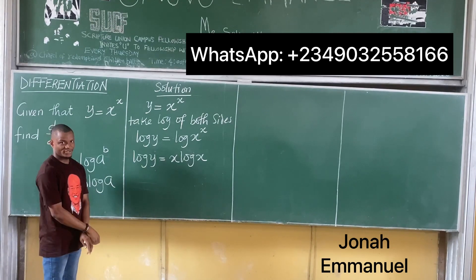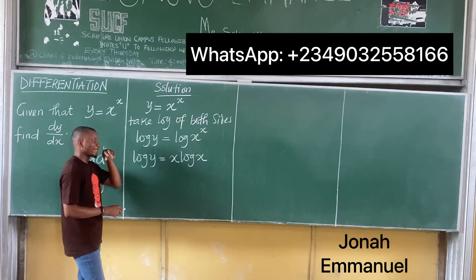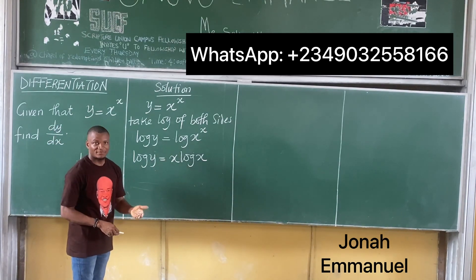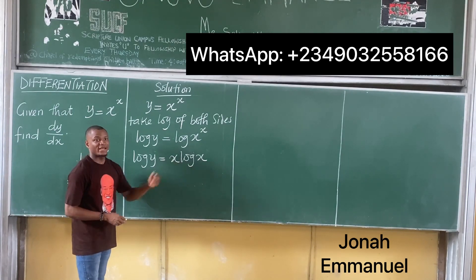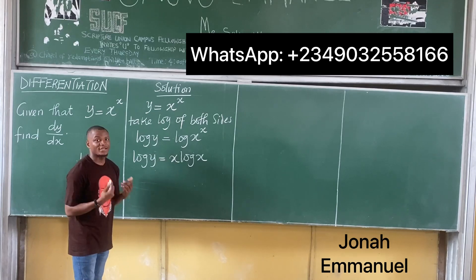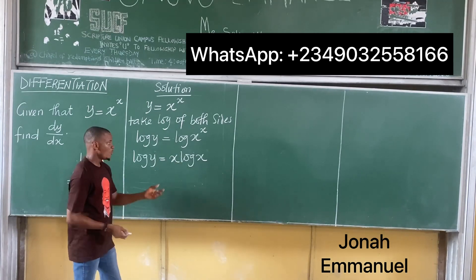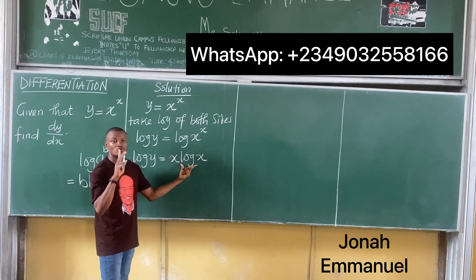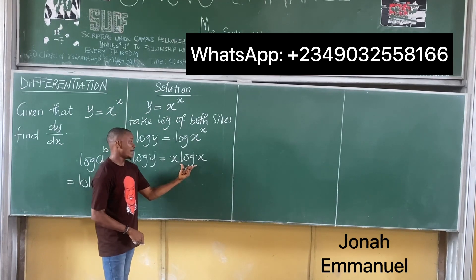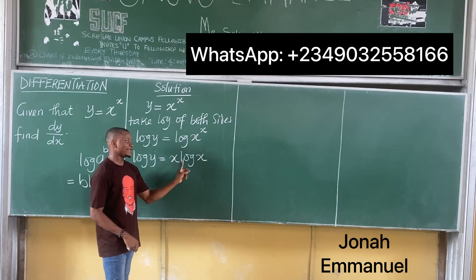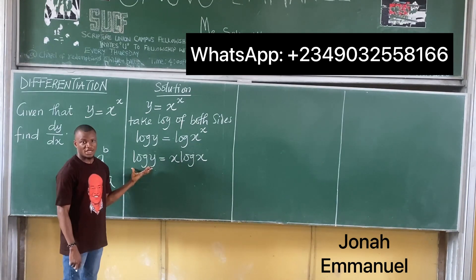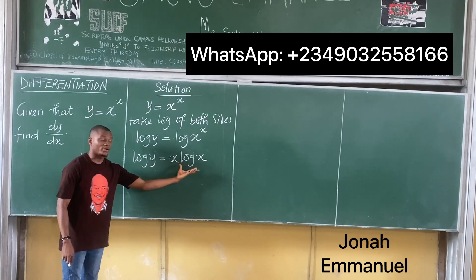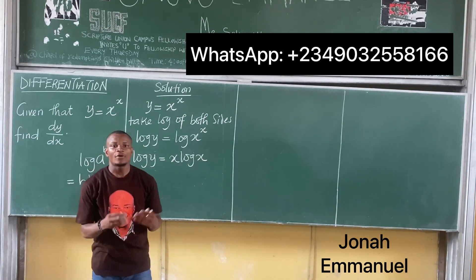So I am now at this point. I can see that on the left I have log y, which means I have to use implicit differentiation. While on the right, I have two terms: x and log x, where x multiplies log x — so I will use the product rule.